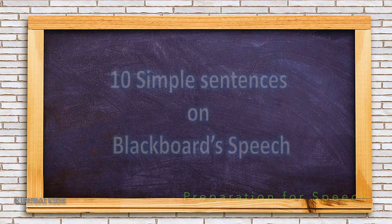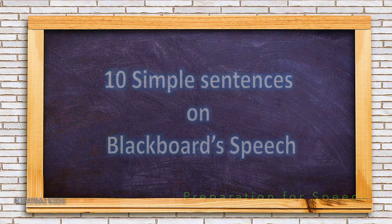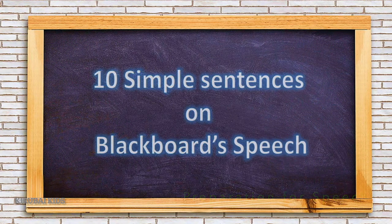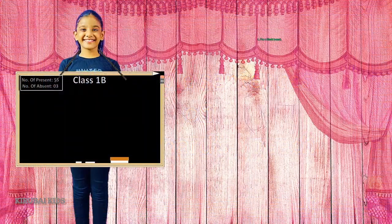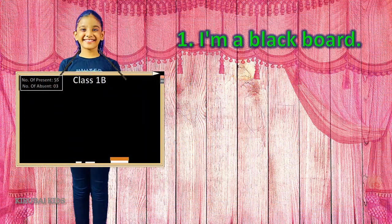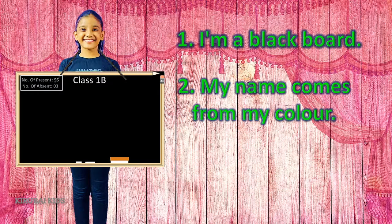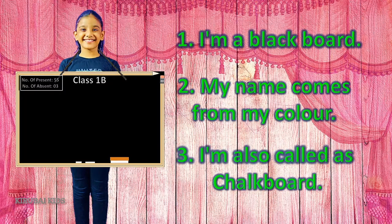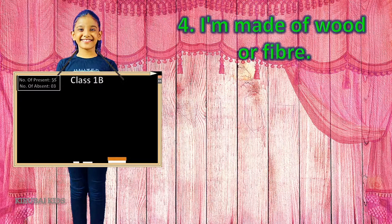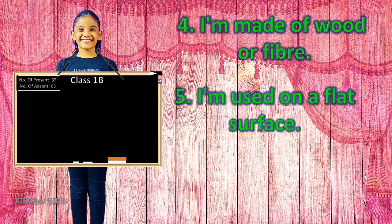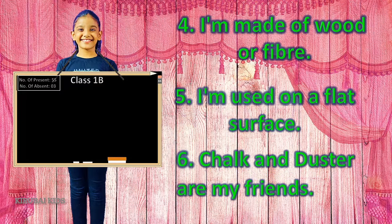Now we will see 10 simple sentences on blackboard speech. I am a blackboard. My name comes from my color. I am also called a chalkboard. I am made of wood or fiber. I am used on a flat surface. Chalk and duster are my friends.